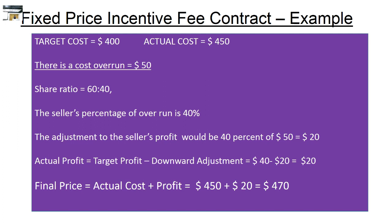The actual profit will be equal to target profit minus the adjustment to the seller's profit due to overrun. The adjustment to the seller's profit is $20, so the actual profit equals $40 − $20 = $20. Based on this, the final price equals actual cost plus profit: $450 + $20 = $470.